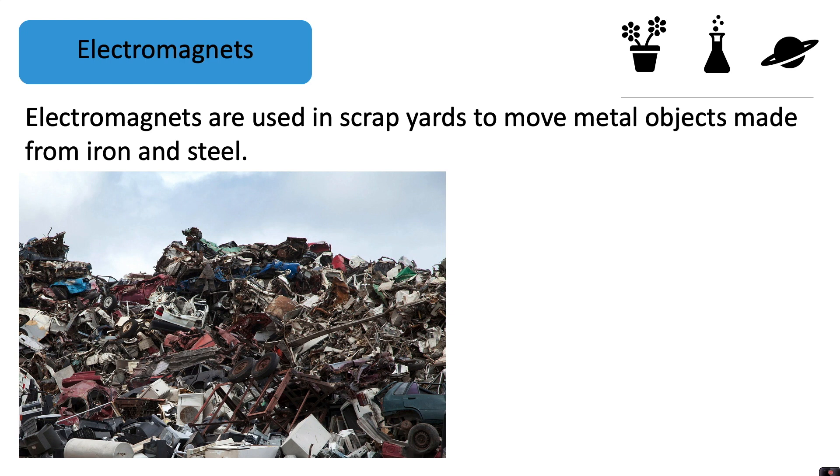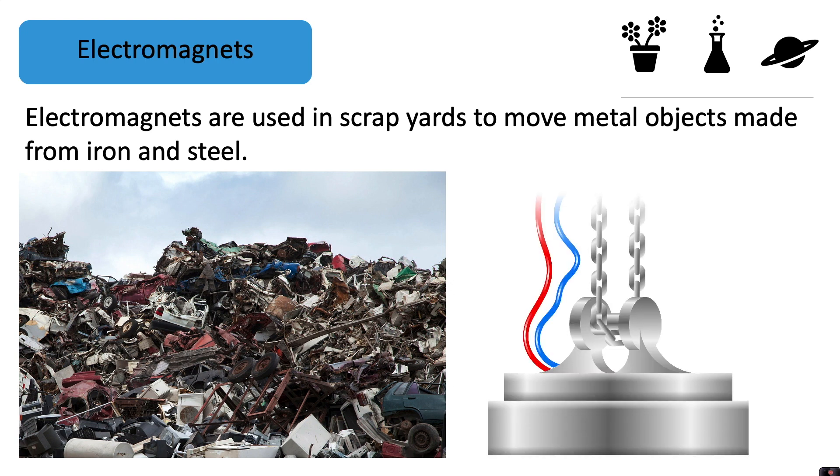Firstly, electromagnets are used in scrap yards to move metal objects made from iron and steel. The scrapyard would use a really strong electromagnet attached to a crane, and using this it can move heavy objects from one place to another.